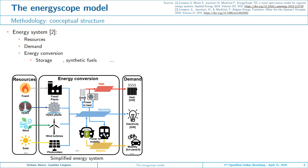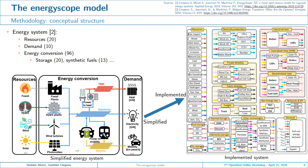A realistic energy system looks like this: we have 20 resources, 10 demands, and almost 100 energy conversion technologies. Of these, we have 20 storage technologies including thermal, fuel, and electrical storage.